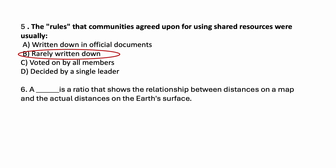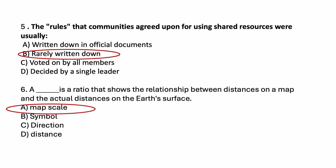A dash is a ratio that shows the relationship between distances on a map and the actual distances on the earth's surface. Options are: map scale, symbol, direction, distance. The correct answer is map scale. A map scale is a ratio that shows the relationship between distances on a map and the actual distances on the earth's surface.